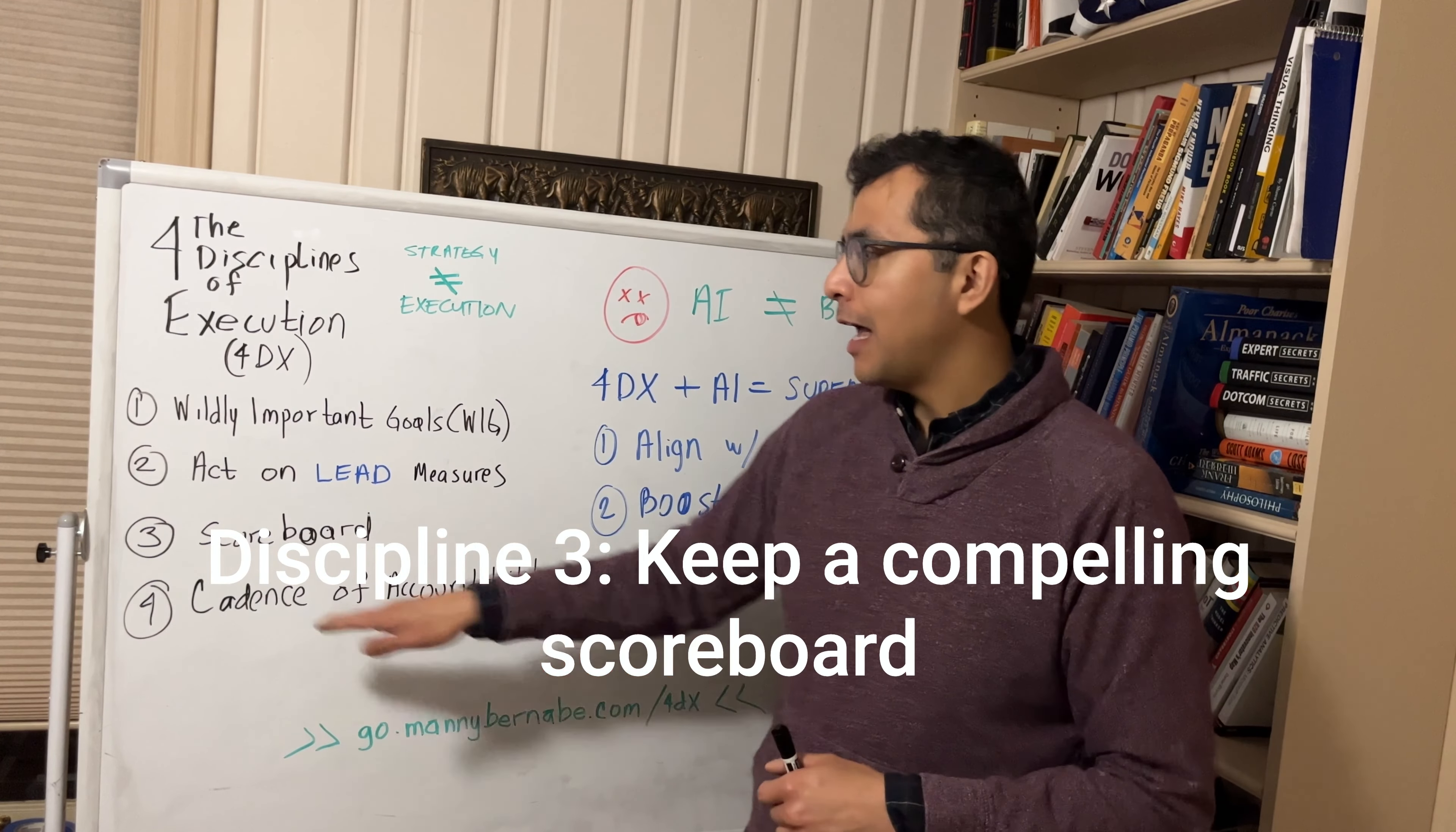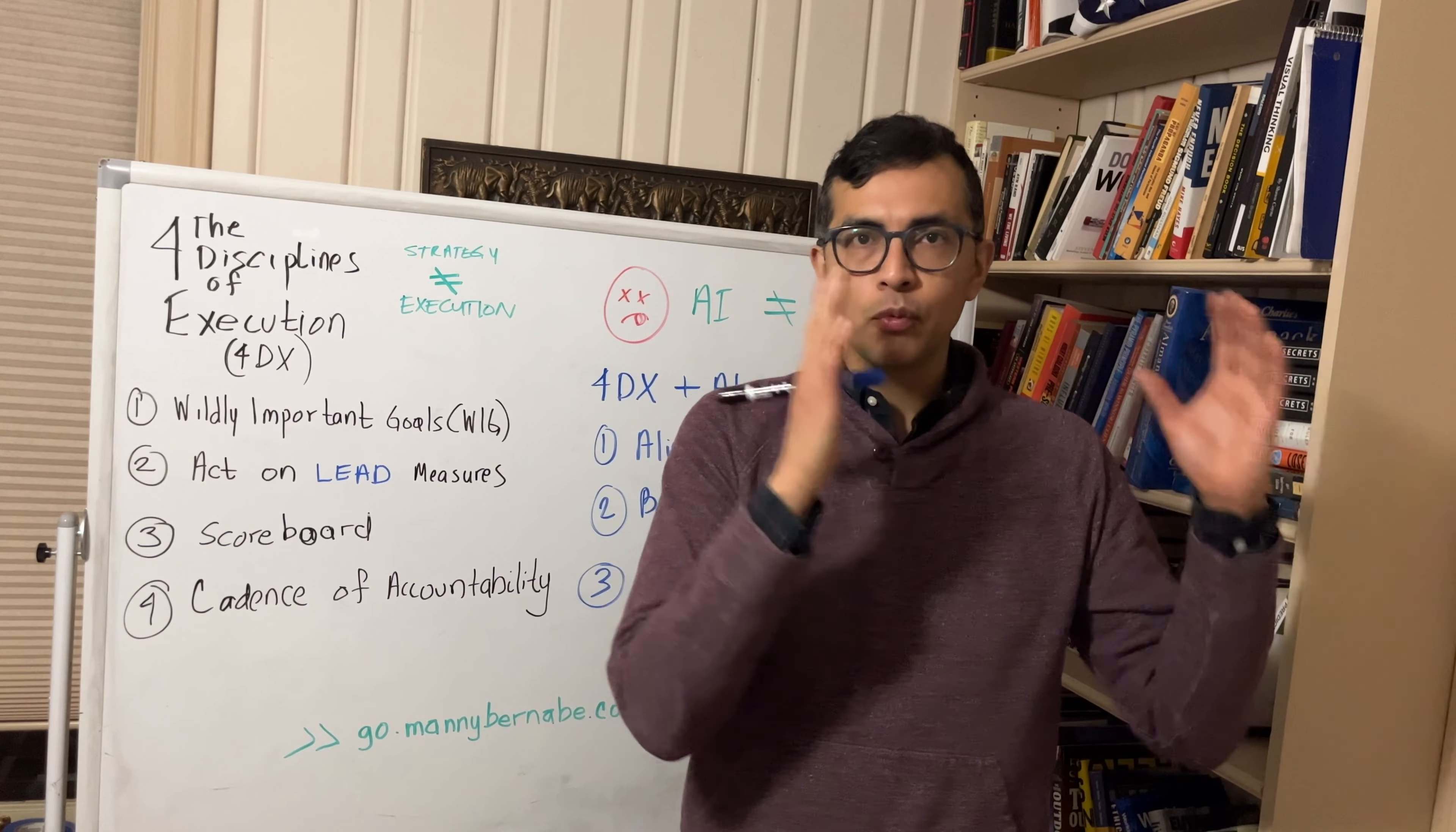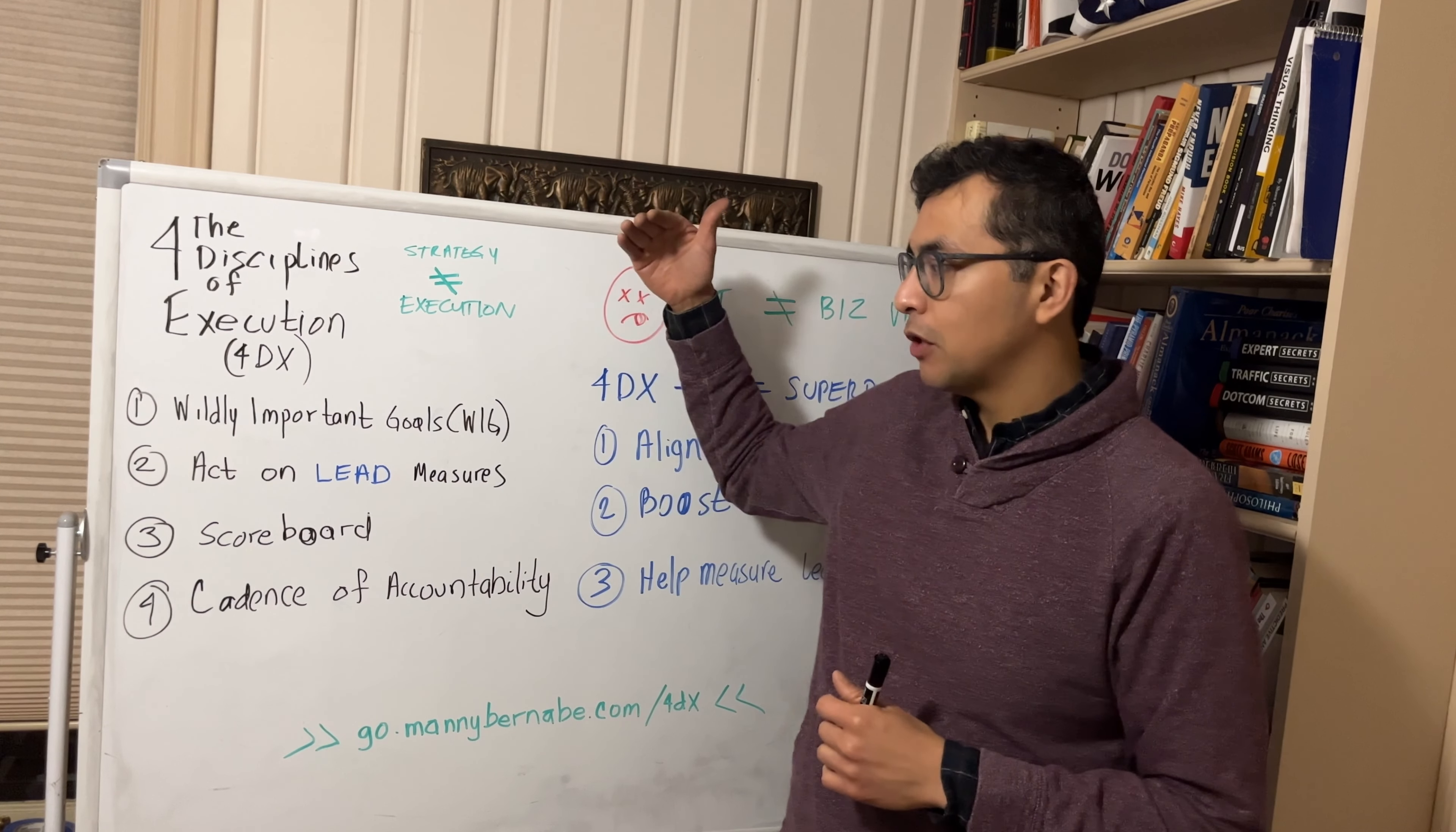Discipline number three is having a compelling scoreboard. So you have a dashboard or scoreboard where everybody knows whether or not the team is winning or losing and what points have been put on the board that are helping to drive lead metrics that are ultimately going to help drive the lag metrics.